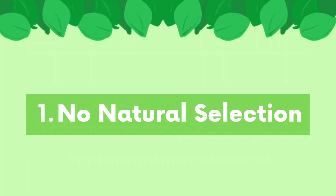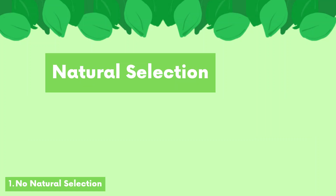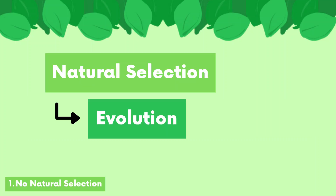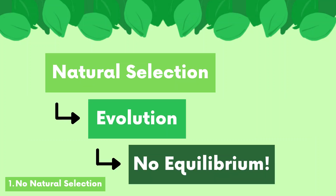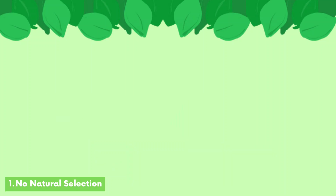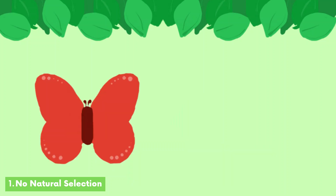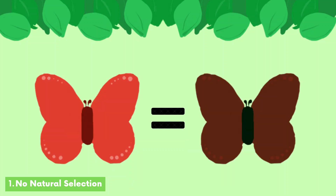First, there must be no natural selection. Natural selection causes evolution, which is the opposite of equilibrium. So all phenotypes have to have an equal chance of surviving and reproducing.